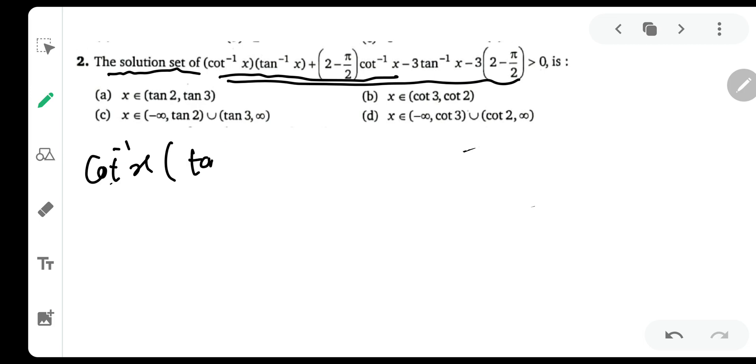So what will remain is tan inverse x plus 2 minus π by 2, then you can take minus 3 common and what will remain is tan inverse x plus 2 minus π by 2 which is greater than 0.